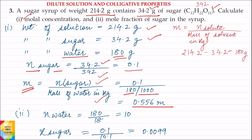For the second part of the question, we find the mole fraction of sugar in the syrup. The formula for mole fraction of sugar is moles of sugar divided by total moles, where total moles equals moles of sugar plus moles of water.